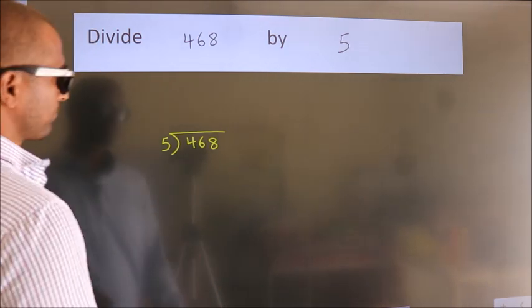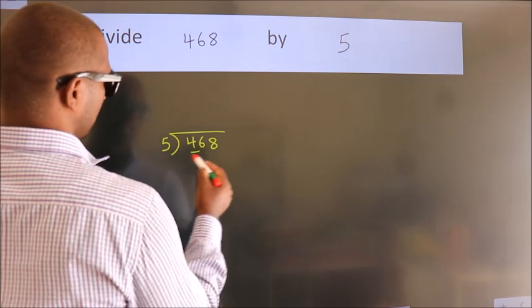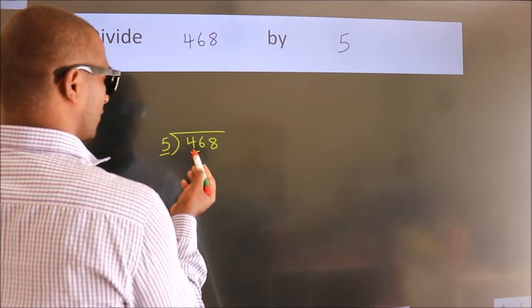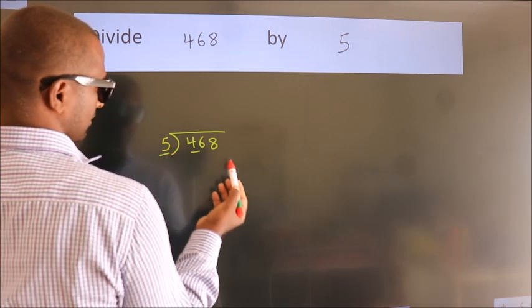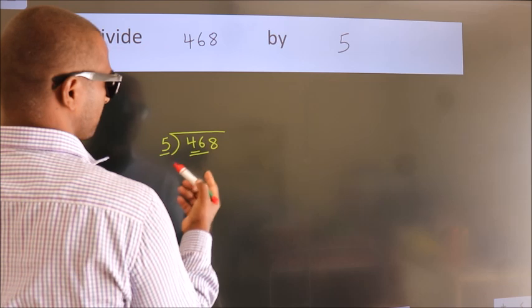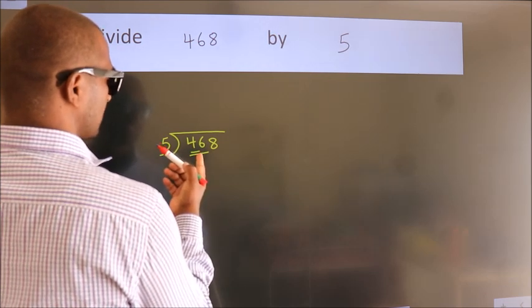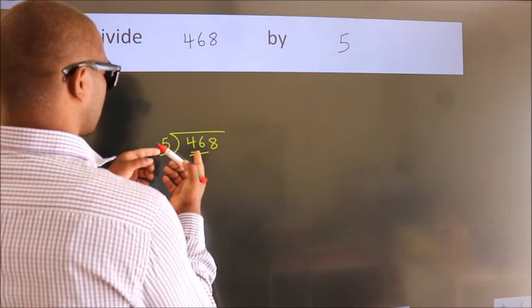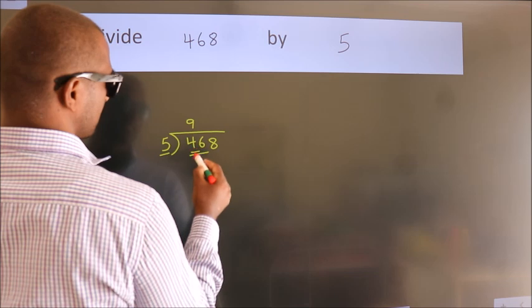Next. Here we have 4, here 5. 4 smaller than 5. So we should take two numbers, 46. A number close to 46 in 5 table is 5 nines 45.